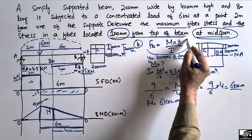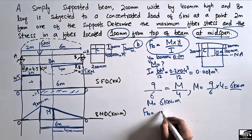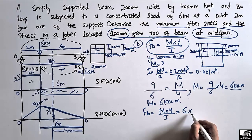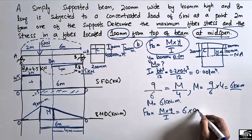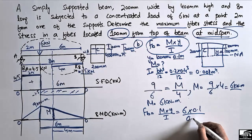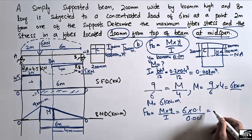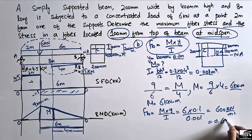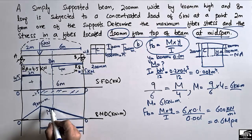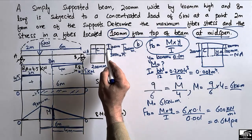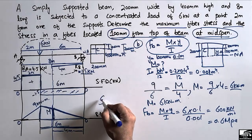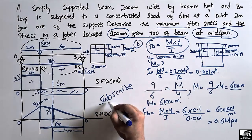Substituting into the formula σ = M·y / I: M is 6 kilonewton meter, y is 0.1 meter, and I is 0.001 meter to the power 4. This gives 6 multiplied by 0.1 divided by 0.001, equal to 600 kilonewton per square meter, or 0.6 megapascal. This is the stress at mid span located 100 millimeter from the top of the beam.